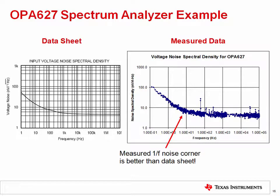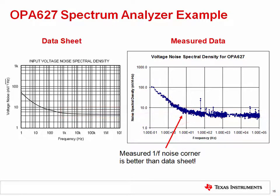Here we compare the final combined voltage spectral density curve measurement with the datasheet curve. The 1/f noise corner differs from the datasheet, which is not unusual — the 1/f noise corner changes with process variations and the datasheet curve shows typical performance only. The broadband spectral density compares well between the measured result and the datasheet curve. The measured noise curve could have been improved with additional averaging and shielding, but overall it provides an excellent depiction of the device's noise spectral density.